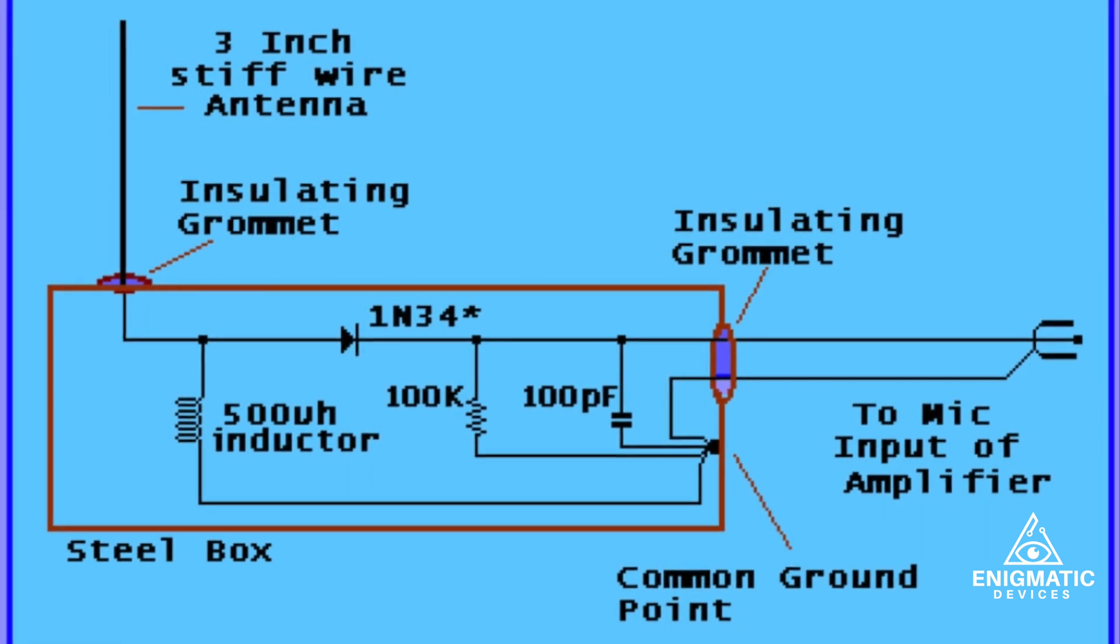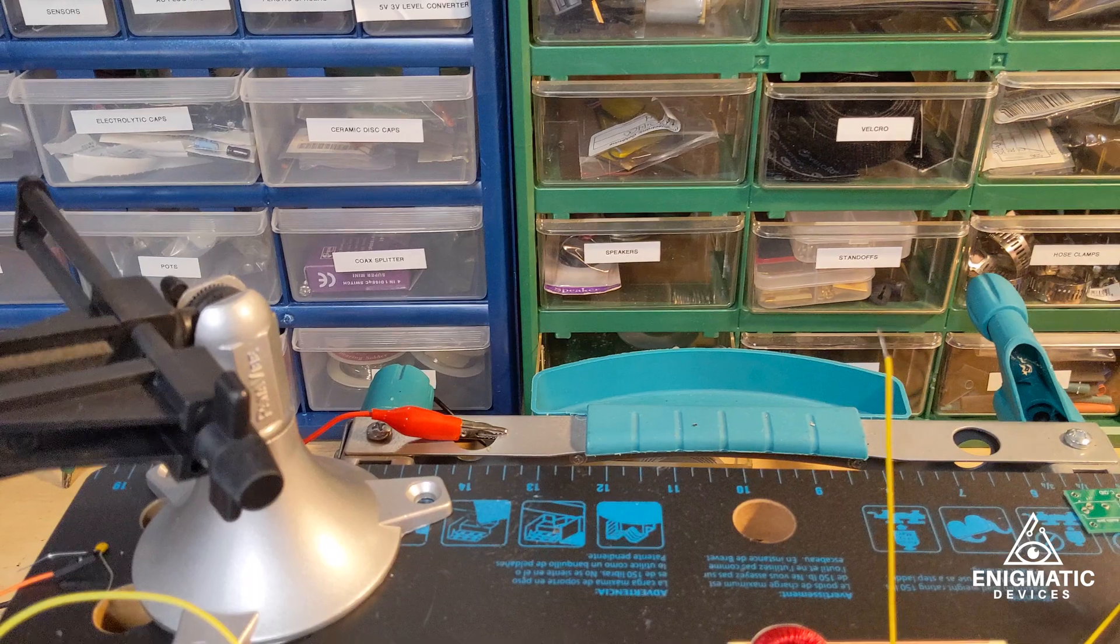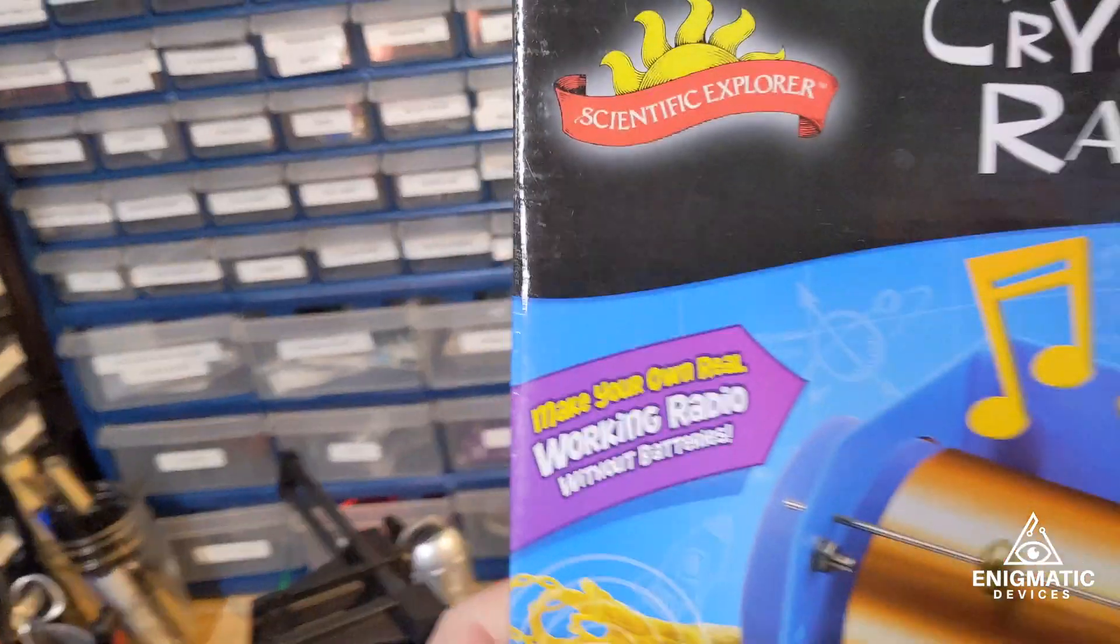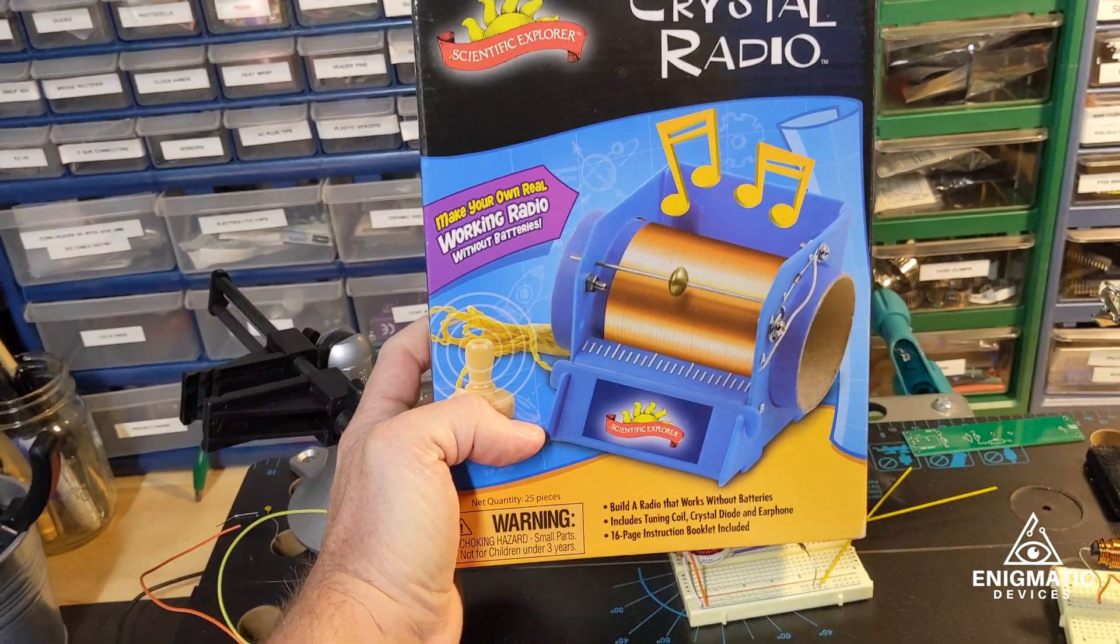And then, so essentially, how does it work? Well, the components itself, inside there, there's essentially a germanium diode and an RF choke or an inductor. And that's basically it. There's a resistor in there. And when you look at the circuitry itself, it's suspiciously close to a crystal radio, right? Because I have a crystal radio kit here. And if you look at this, it's essentially the same idea.